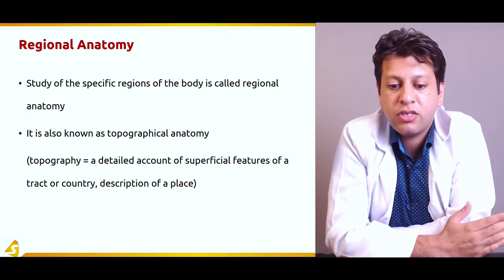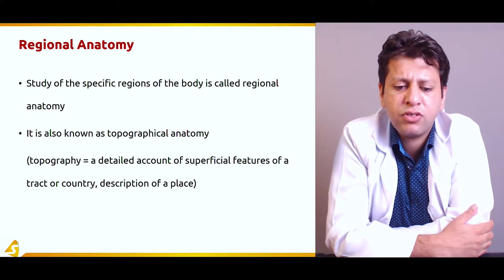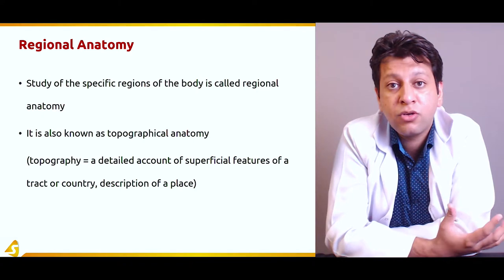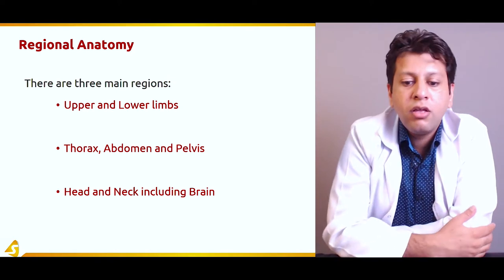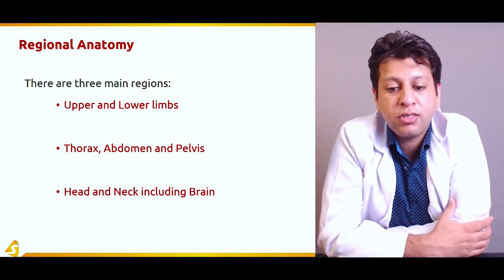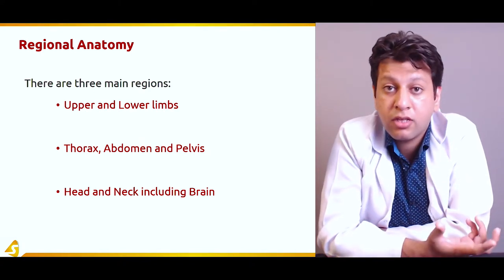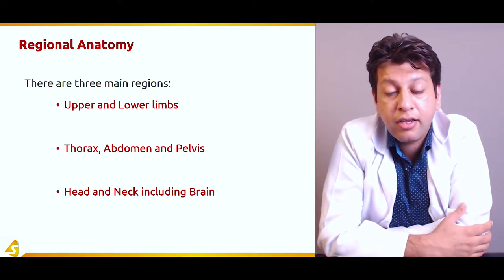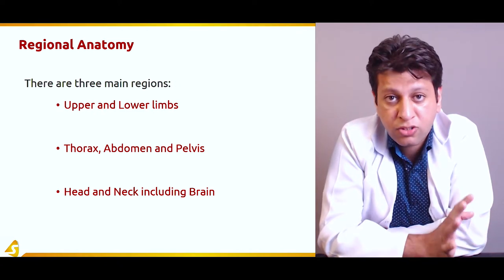Regional anatomy is also called topographical anatomy, because a detailed account of superficial features of a specific area is called topography. For example, studying just the upper limb is regional anatomy. The body is divided into regions: upper and lower limbs form one region, the thorax is another, the abdomen and pelvis are considered one region, and the head and neck including the brain are studied as one region.